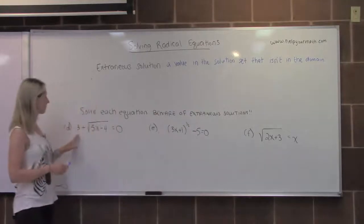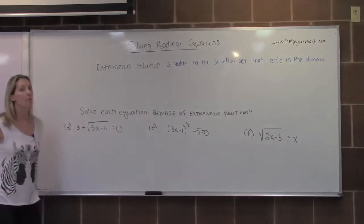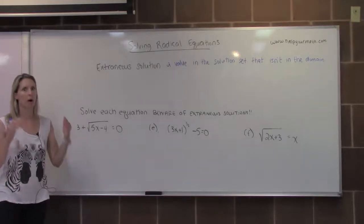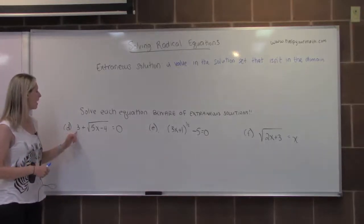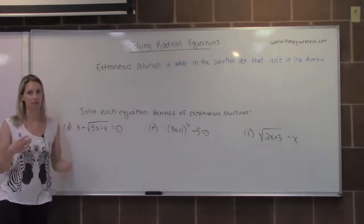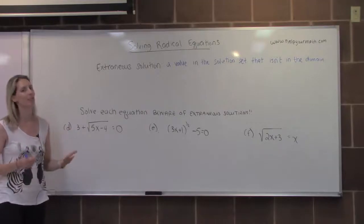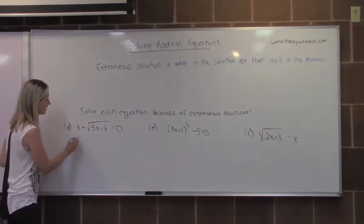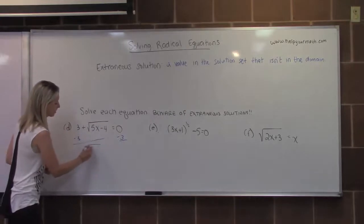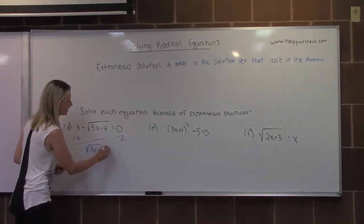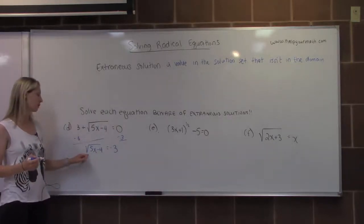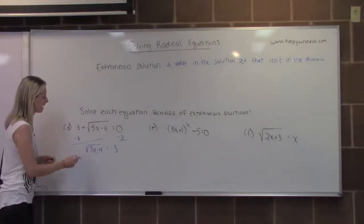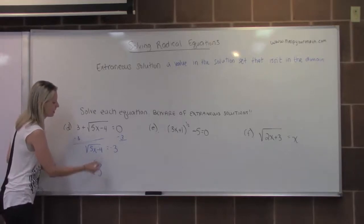In letter D, we have 3 plus the square root of 5x minus 4 equals 0. Before squaring, we want to isolate the radical first — otherwise squaring will create a binomial and won't clear the radical. So I subtract 3 from both sides, giving the square root of 5x minus 4 equals negative 3. At this point, since a square root cannot equal something negative, we can stop and say there is no solution.